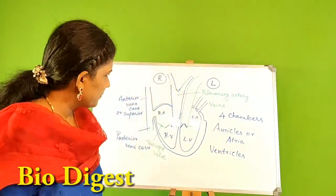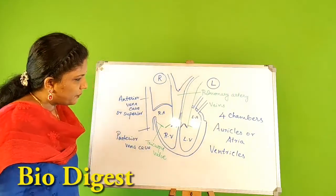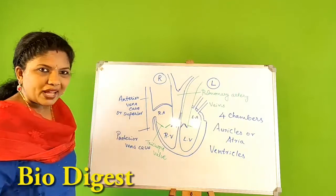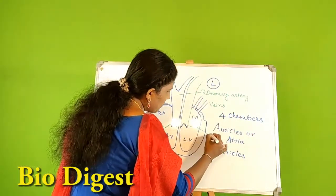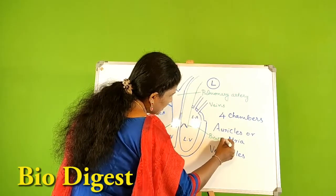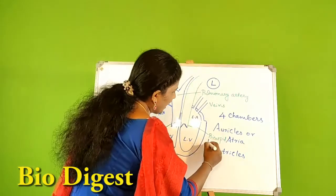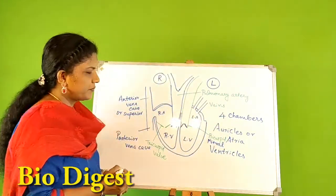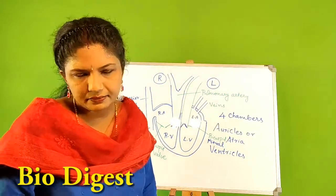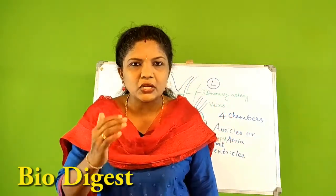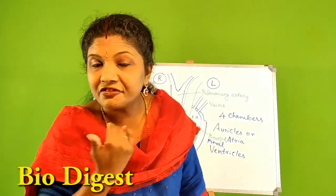Between the left atrium and the left ventricle, there is an atrioventricular valve with two cusps, called the bicuspid valve, otherwise also called the mitral valve. It opens from the left auricle into the left ventricle. The bicuspid or mitral valve is located at the aperture between the left auricle and the left ventricle.